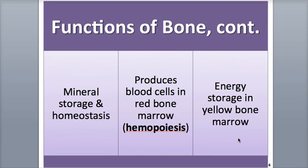A sixth function of bone is energy storage. As bone ages, much of the red bone marrow is converted to yellow bone marrow, which is made up mostly of adipose cells that store triglyceride fats and function as a source of energy.